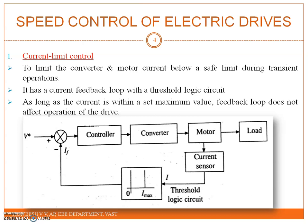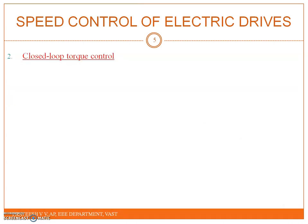During transient operation, if the current exceeds the set maximum value, the feedback loop becomes active and the current is forced below the set maximum value, which causes the feedback loop to become inactive again. If the current exceeds the set maximum value again, it is brought back below it by the action of the feedback loop. Thus, the current fluctuates around the set maximum limit during transient operation until the drive condition is such that the current does not tend to exceed the set maximum value.